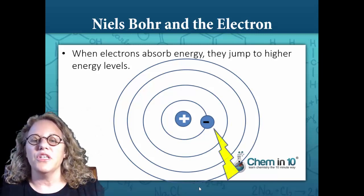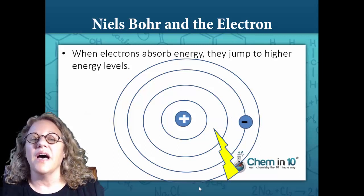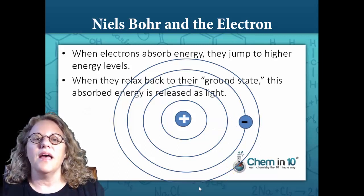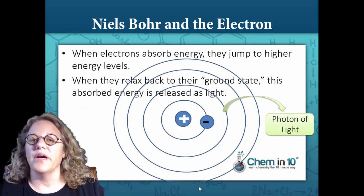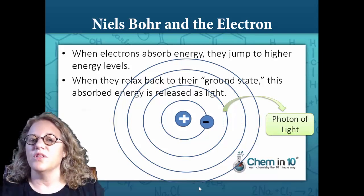When the electrons absorbed energy, they would move to higher energy levels, and when they gave off that energy, when they relaxed back to a lower energy state, they would give off a photon of light.